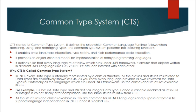Every language provides its own keywords for data types, but internally all the languages which run under .NET framework use the classes and structures available in CTS. For example, C# has the int data type and VB.NET has the Integer data type. Hence a variable declared as int in C# or Integer in VB.NET, finally after compilation, uses the same structure Int32 from CTS. All the structures and classes available in CTS are common for all .NET languages, and the purpose of these is to support language independence in .NET. Hence it is called CTS.